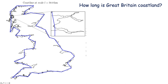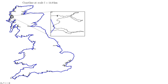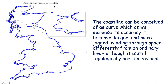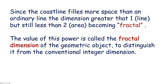This came about in trying to establish how long, for instance, is the Great Britain coastland. You can join various points along the map. If the points are fairly coarse, you get a fairly simple geometrical shape. But if you increase the number of points — say, every step is only 14 kilometers apart — it becomes more jagged. If you make it even finer, with only 100 meters between points, it becomes a more realistic map of England. So the coastland can be conceived as a curve which, as we increase its accuracy, becomes longer and more jagged, winding through space differently from an ordinary line, although it's still topologically one-dimensional. But since the coastland fills more space than an ordinary line, the dimension is greater than one but still less than two. This dimension becomes what has been called fractal — a fraction between one and two.